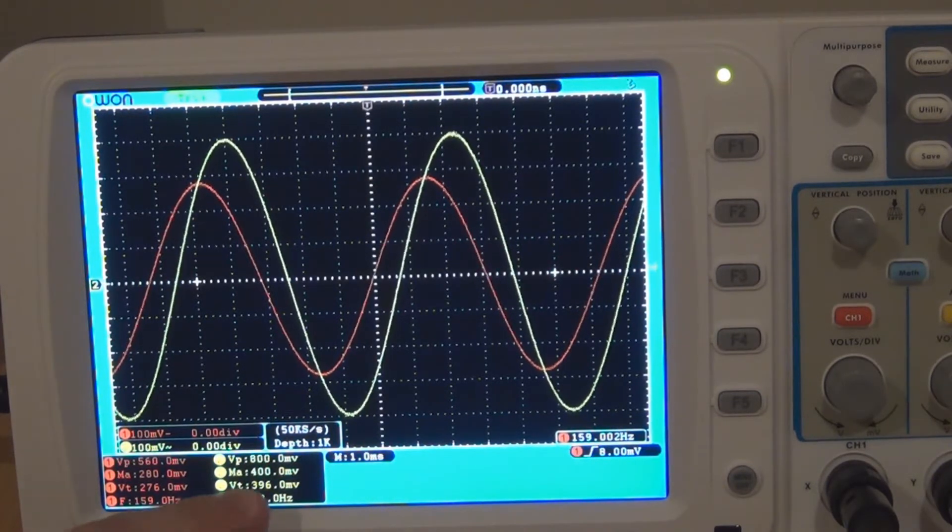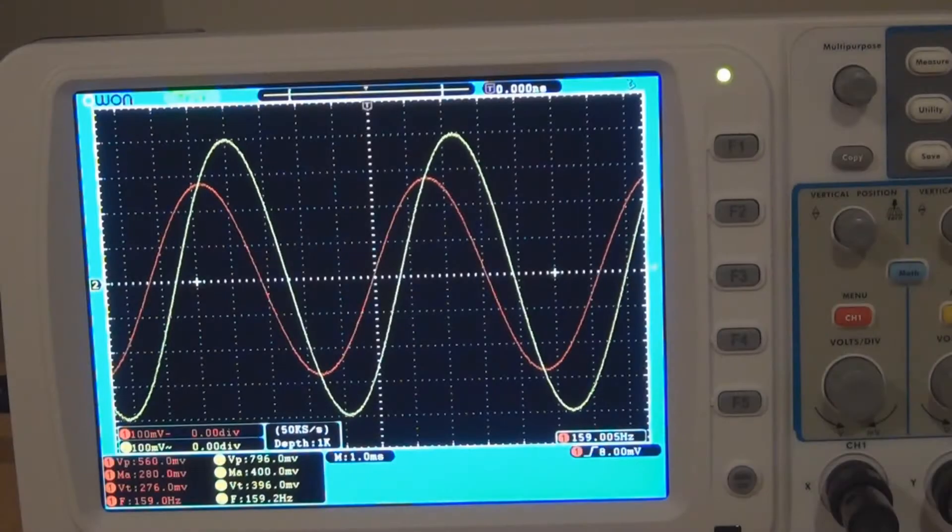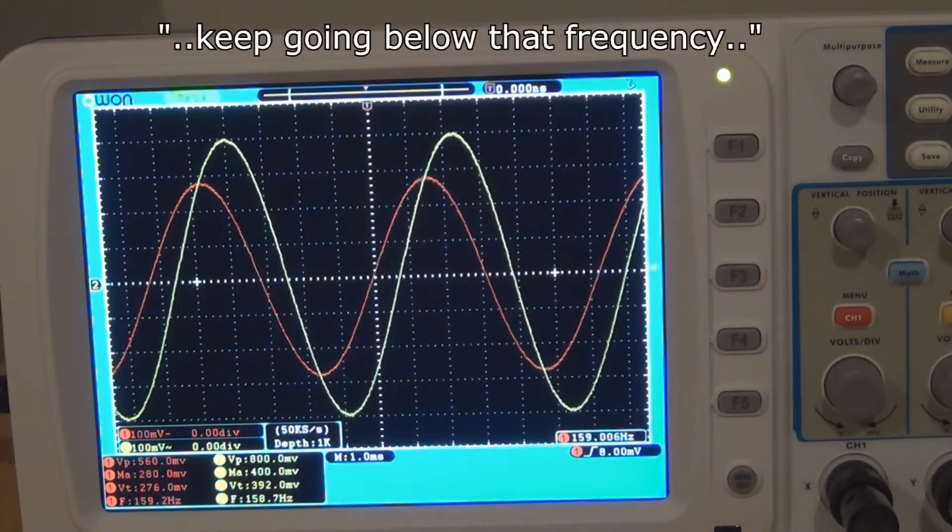And if you look at the voltages peak to peak you can see the input signal is about 800 and the filtered signal is about 560 and I've put that in the calculator before and it's around 30%. So that's the corner frequency and if you keep going below that frequency it will get smaller and smaller.